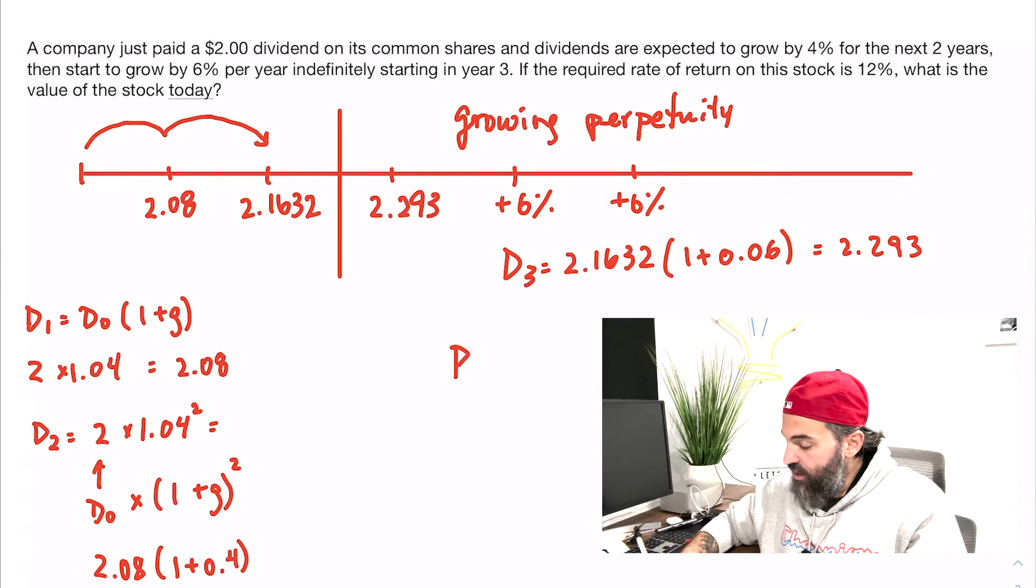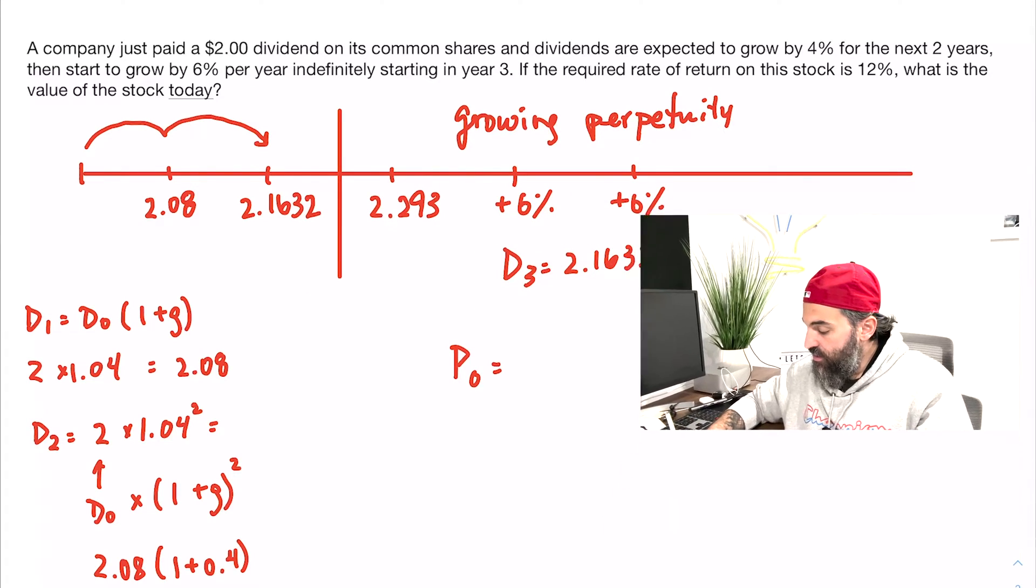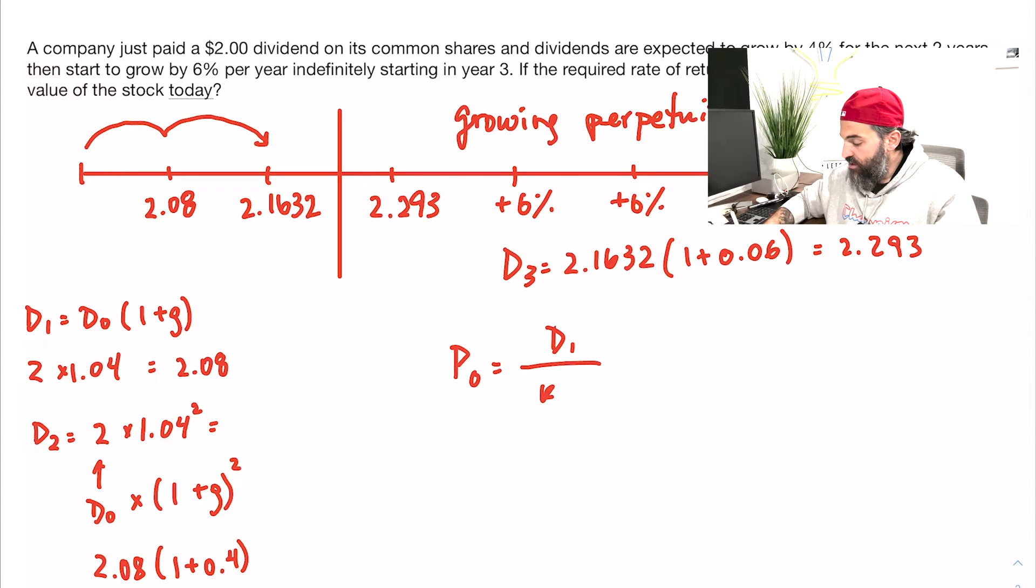For the growing perpetuity, we know that the formula is P0 equals D1 over k minus g—the price of a stock with growing dividends. Since we're not using D1, our growing perpetuity starts at D3, so this formula actually becomes P2 equals D3 over k minus g. So that would be 2.293...